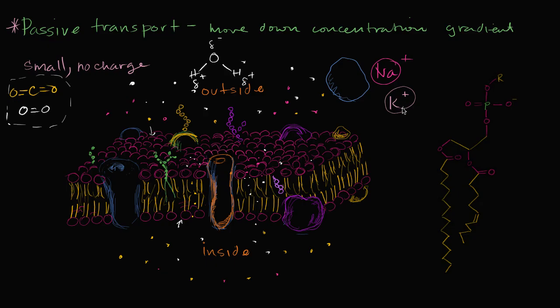And then we talked about things that would have a tough time, and that's charged particles. Because charged particles, and we have some ions right over here, sodium ion, a potassium ion, even though these are fairly small, they're going to interact a lot with the phosphate heads right over here with this charge, which is going to make it hard for them to actually penetrate through the membrane.